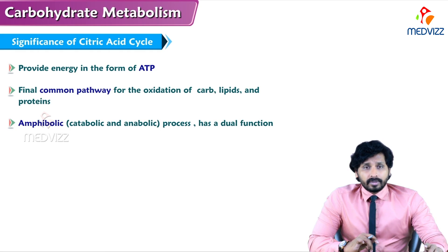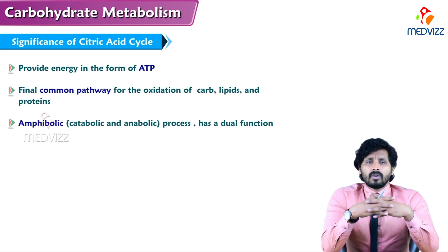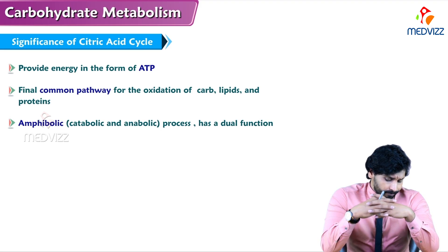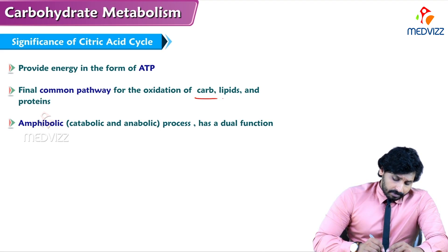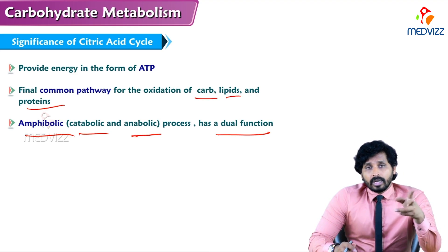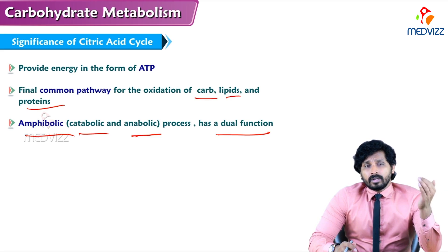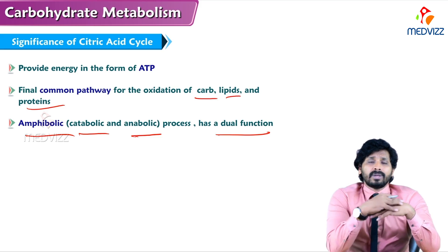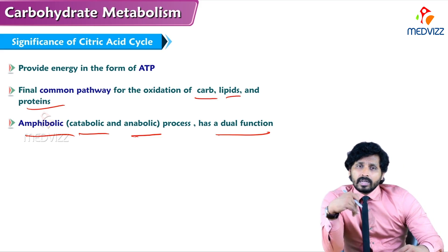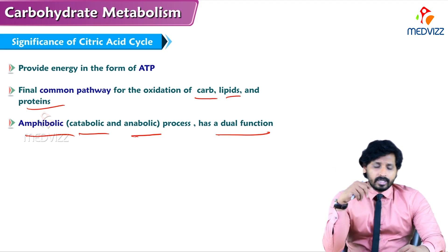Regarding significance: TCA cycle provides energy. With glycolysis alone, we get only a small amount of ATPs — 7 or 2 depending on oxygen availability. TCA cycle is also the final common pathway for carbohydrates, lipids, and proteins. It is amphibolic — meaning it has dual function: catabolic reactions involve sequential removal of carbon from glucose, while anabolic reactions include conversion of oxaloacetate to aspartic acid and alpha-ketoglutarate to glutamic acid. So TCA cycle has both a catabolic and an anabolic role — that is why it is known as amphibolic.